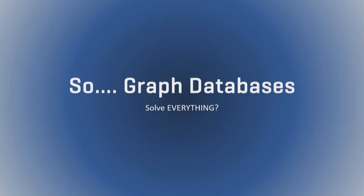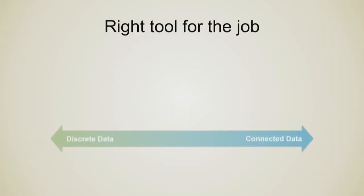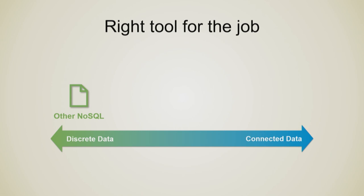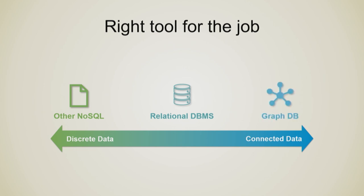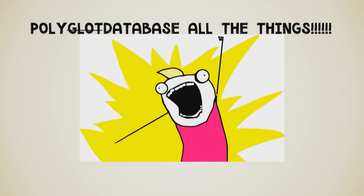So, graph databases. It's a whistlestop overview — not very technically deep, just a brief overview. And no, graphs don't solve everything — anyone who tells you any database solves everything is lying. There are specialist databases for a reason. If you have discrete data and documents, use a NoSQL document database. If you have a little bit of connections and you don't care too much about them, use a relational database — they're very good, they're performant, and they've had years of iterations. If you have really connected data, use a graph database.